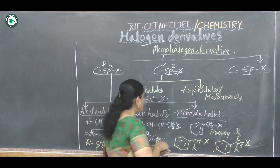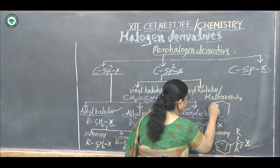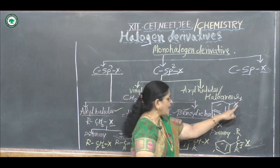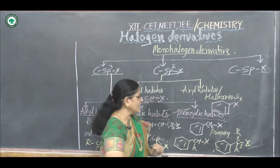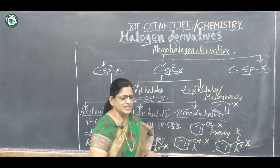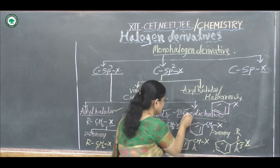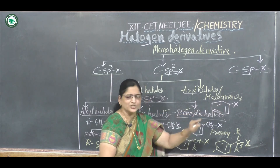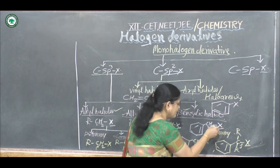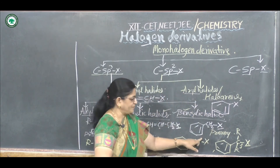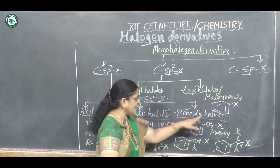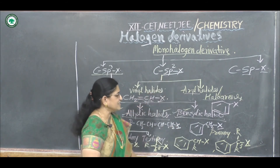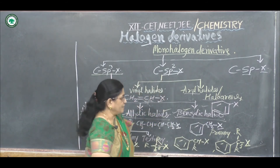Aryl halides or haloarenes: the halogen atom is directly bonded to the benzene ring. This is different from benzylic halides, where the halogen is bonded to a carbon of the benzyl group rather than directly to the ring. Benzylic halides have sp3 hybridized carbon, whereas aryl halides have sp2 hybridized carbon.